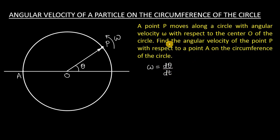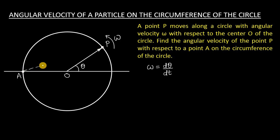Now we have to find the angular velocity of point P with respect to a point A on the circumference of the circle. Although A is not the center of the circle, we have to find the angular velocity of point P with respect to point A.